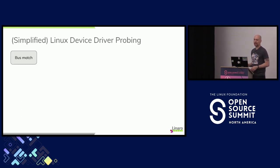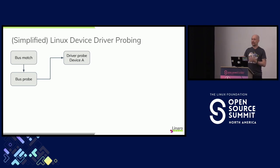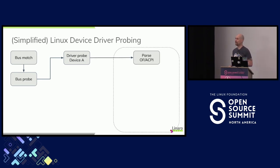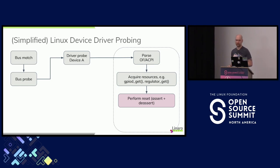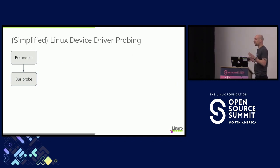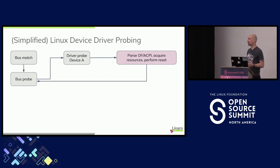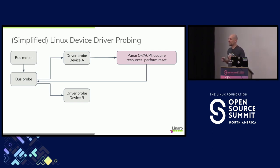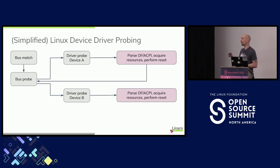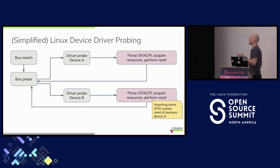So how does device probing look from that point of view? You have bus matching, bus probing — you probe a device for a particular driver. The probe function usually parses some resources, opens a device tree or ACPI, acquires these resources like GPIO, regulator, clock, then performs the reset, and then returns — exiting the probe and finishing the device driver probe. If you have multiple drivers sharing some parts, device A performs all the probing, acquires resources, performs the reset, and then we probe device B. This could be synchronous or asynchronous, but the point is it's never exactly the same time. Device B will do the same: parse resources, acquire ACPI, acquire resources, perform the reset. Therefore, device B will also reset device A.